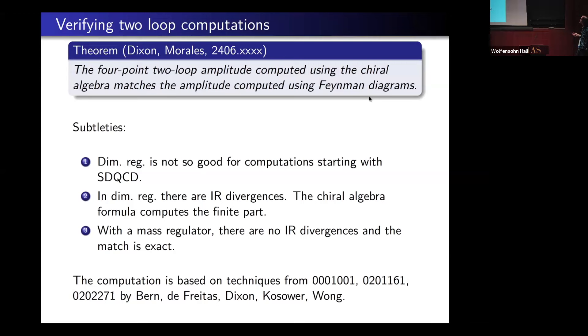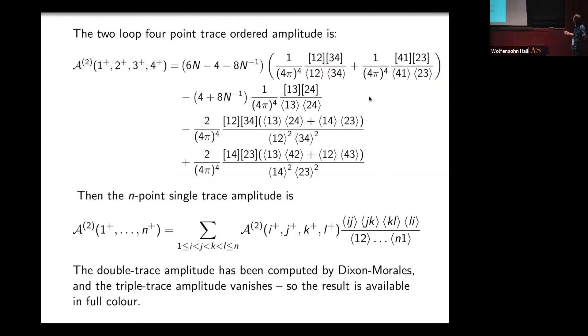What they found was, yes, it matches, but there's a subtlety about dimreg. One conclusion of their paper is that dimreg is not a good thing to do when you're starting with self-dual QCD, because self-duality is very tied to dimension four, and these arguments don't work in dimension four plus epsilon. If you use dimreg, they found there are IR divergences. It's not entirely finite and rational, but the chiral algebra formula computes the finite part. If you use a mass regulator, then there are no IR divergences and the match is exact. For me, this is a pretty non-trivial check, because there's a bunch of terms and free parameters, and they all match.